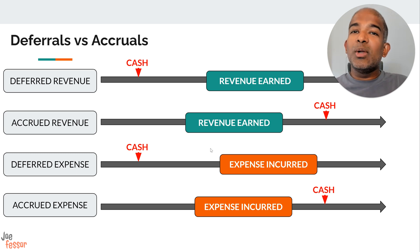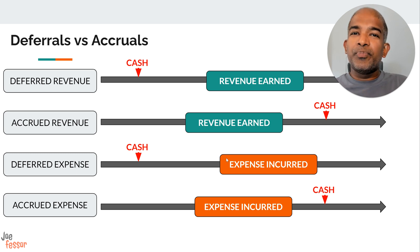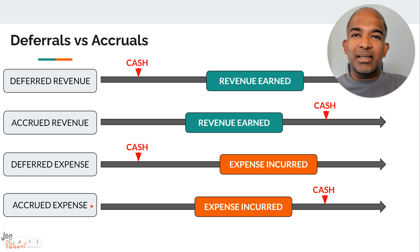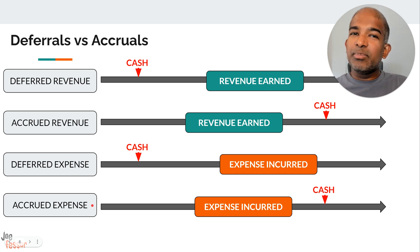Remember when we discussed accrual basis accounting — understanding that should help you not confuse these terms anymore. These four key terms fall under deferrals and accruals: deferred revenue, accrued revenue, deferred expense, and accrued expense. I dive deeper into each of these in a separate video, so you'll get a full understanding of how they work. You'll find the link to that video in the description below.